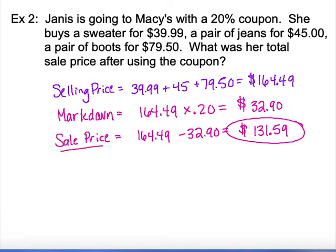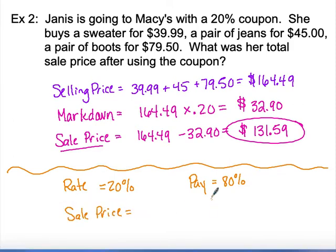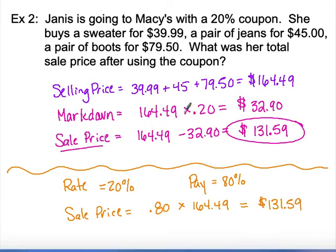The easier way when shopping is to figure out what percent you're actually paying. If the markdown rate is 20%, you're paying 80% — that's a quick subtraction from 100. So instead of multiplying by the rate and then subtracting, I subtract the rate from 100 first and multiply by the original: 80% times $164.49 also gives $131.59. I just switched the order of operations to get to the same place.